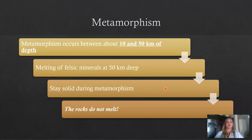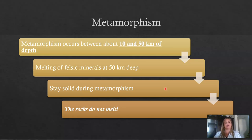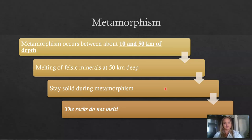Metamorphism occurs between 10 and 50 kilometers. At 50 kilometers, felsic minerals — quartz, muscovite, plagioclase, everything rich in silica — start to melt. Once melting starts, it is no longer metamorphic. The rocks being metamorphosed stay solid during metamorphism; they do not melt. If they melt, we consider them igneous rocks.